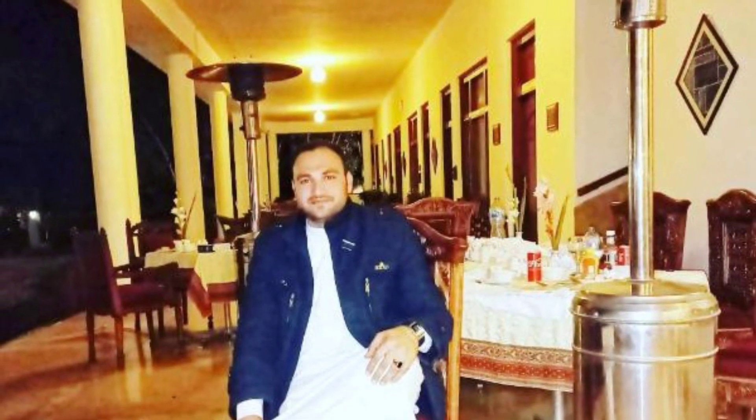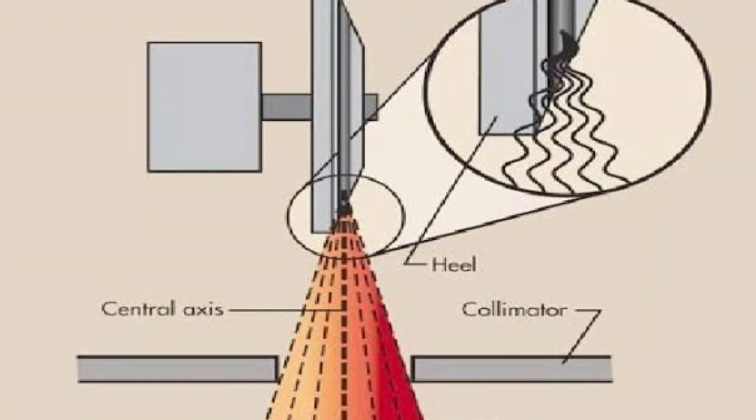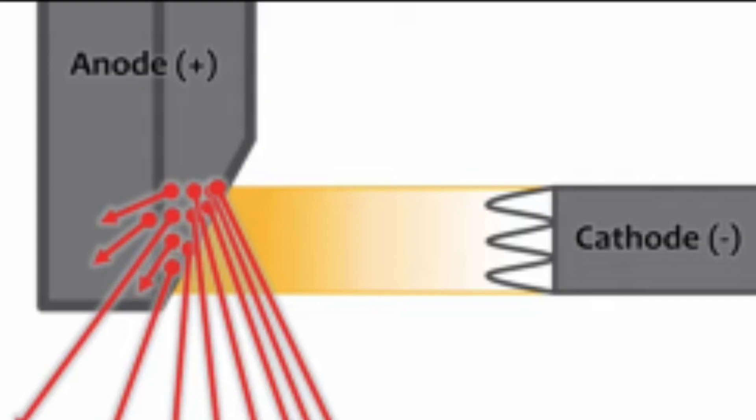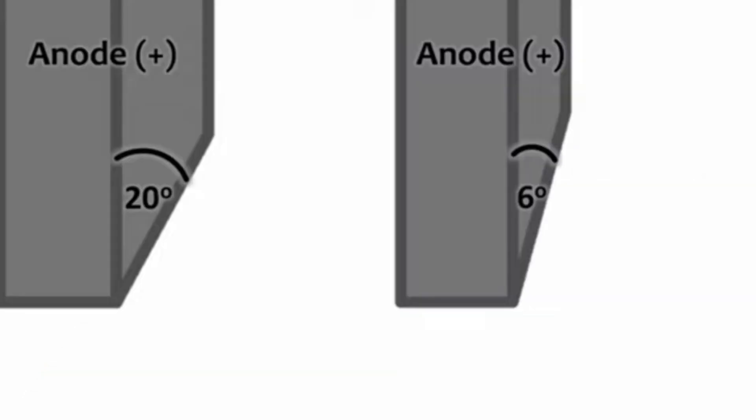Bismillahirrahmanirrahim, Assalamu Alaikum. This is Rizwan Dhawar, you're watching my YouTube channel Radiology Video by Rizwan Dhawar. Today I want to discuss the Anode Heel Effect. What is the Anode Heel Effect? The intensity of the x-ray tube along the anode and cathode axis: toward the anode the intensity decreases, toward the cathode the x-ray intensity increases, due to the x-ray tube angle.